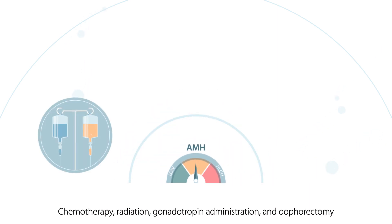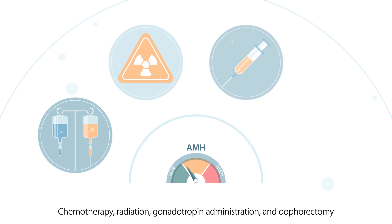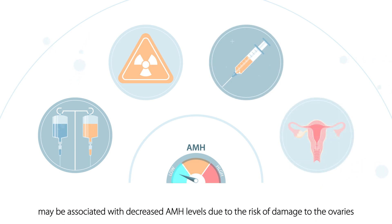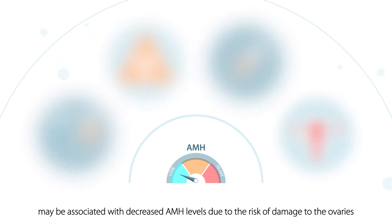Chemotherapy, radiation, gonadotropin administration, and oophorectomy may be associated with decreased AMH levels, due to the risk of damage to the ovaries.